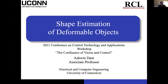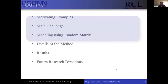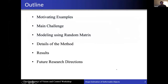Today I'll show some of our recent work on shape estimation of deformable objects. We recently started working in this area, so here is one of our first results. For the outline of this talk, I'll show some motivating examples, present the main challenge, then talk about the key idea we are using for this work, which is based around a random matrix density representation. I'll show some details of the methods, results, and some future directions.